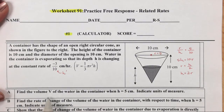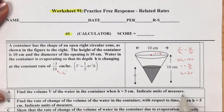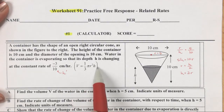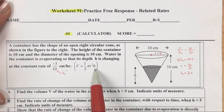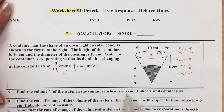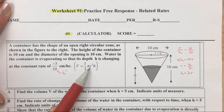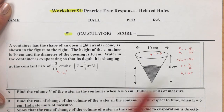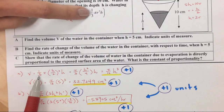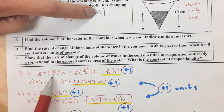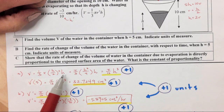Part A: find the volume of water in the container when h equals 5. They give you the formula for volume of a cone. We want to keep h and change r. Since r equals h over 2, we substitute: V equals one third times pi times (h over 2) squared times h.